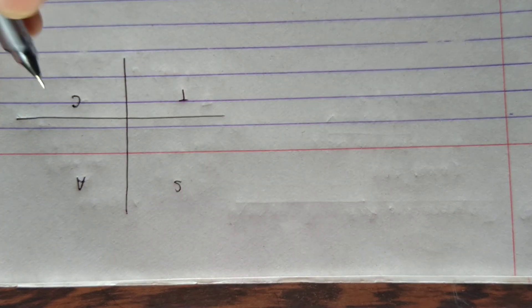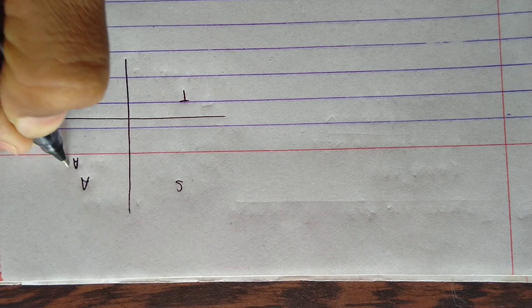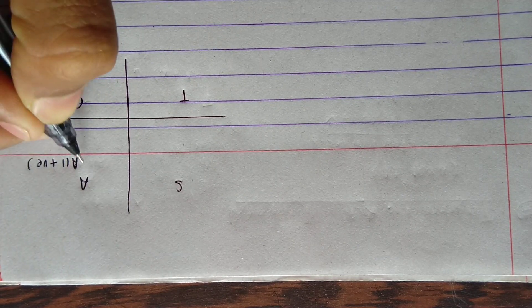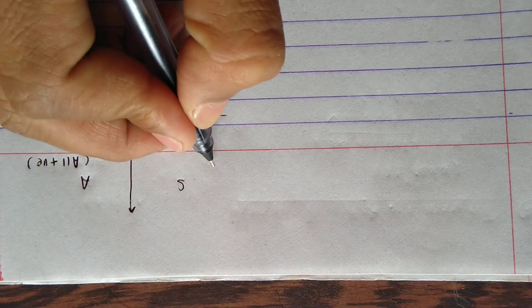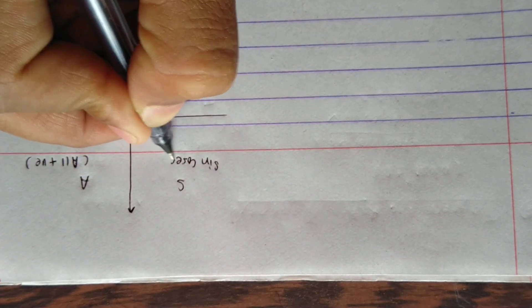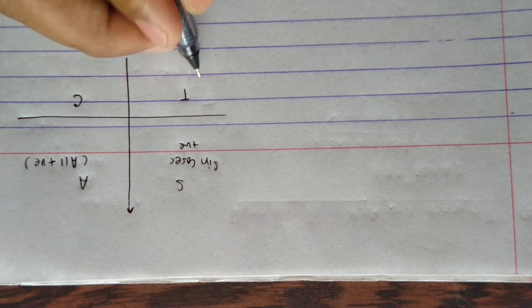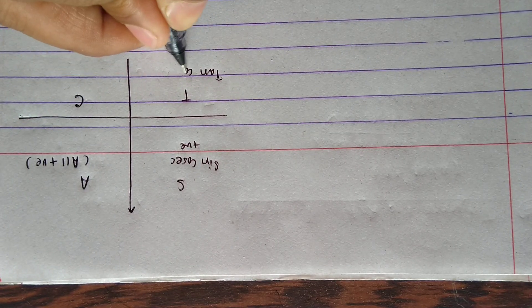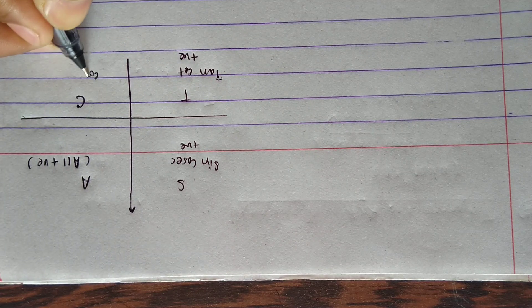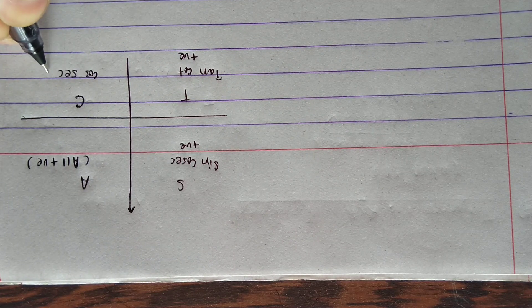C-A-S-T. CAST rule. A represents all trigonometric ratios are positive in this quadrant. Here sine and cosec are positive. Here tan and cot are positive. Here cos and sec are positive.